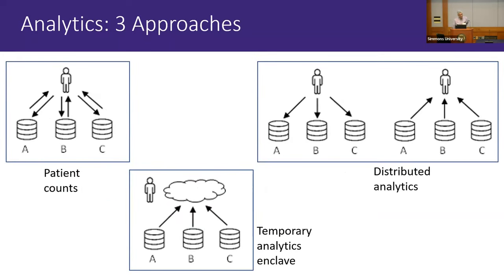Since this is the only network with real-time querying capability through the Shrine interface, some analytics can be done using patient counts alone — and it turns out a fair amount of research can be done with just counts. For deeper analytics, you need raw-level data, achievable two ways: distributed analytics, where code ships to each site, runs locally, and summary statistics are returned centrally; or an enclave approach, where data is pushed centrally. This network aims to support all three levels, as each has pros and cons.